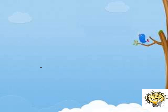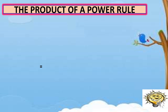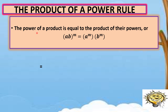The next rule or the next law that we're going to discuss is about the product of a power rule. In this rule, it states that the power of the product is equal to the product of their powers. Or in symbol, you have quantity (ab) raised to m, which is equal to a raised to m times b raised to m. The exponent here is used to multiply to the exponents of the variables inside the quantity.